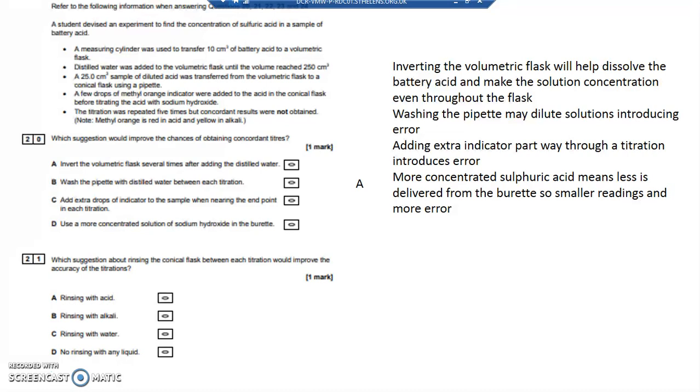Which suggestion about rinsing the conical flask between each titration would increase the accuracy? Well, you can rinse the conical flask because that's not used to deliver either the acid or the alkali. It's just the container for the acid and alkali to come and neutralize each other. You want to keep that clean and wash it with water.